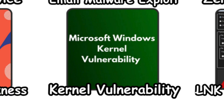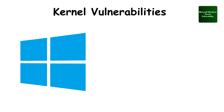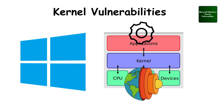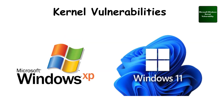Kernel vulnerabilities. Imagine a tiny crack forming at the foundation of a building. The Windows kernel is the core of the system, and any flaw there is extremely serious. Rootkits rely on these cracks to hide deep inside Windows. From XP to Windows 11, this has been one of the biggest security battlegrounds.